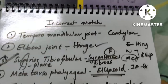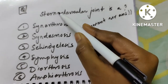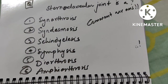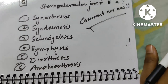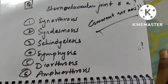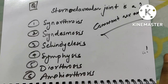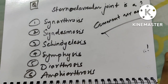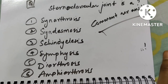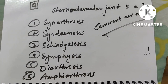Now the question for you: the sternoclavicular joint is — options given (everything looks similar). Comment your answer. After this whole discussion you should be able to answer correctly. Like, share, and subscribe for more videos. Telegram links are in the description for updates and more MCQs.